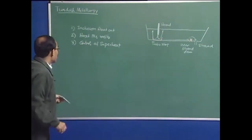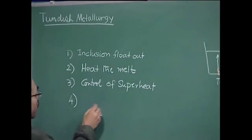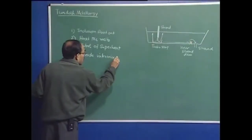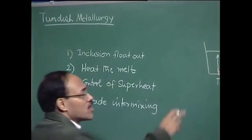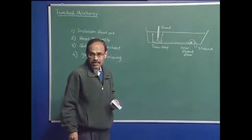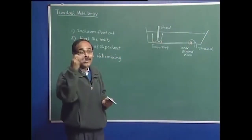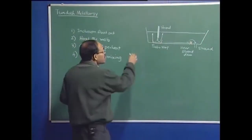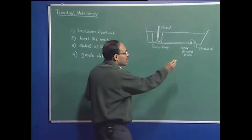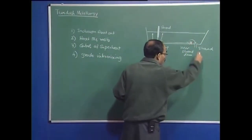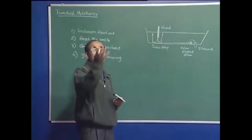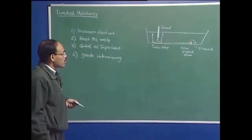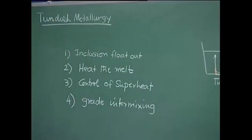The superheat has to be very properly controlled. Another important issue is grade intermixing — this implies that a Tundish may work for 20 heats, but those 20 ladles may not have the same composition. After perhaps 5 heats, the composition is changed. As the composition changes from grade A to grade B, for some time we will produce billets, blooms, or slabs with composition neither of the previous grade nor of the new grade, but an intermixed grade. That is why grade intermixing is very important, as intermixed slabs are often downgraded.